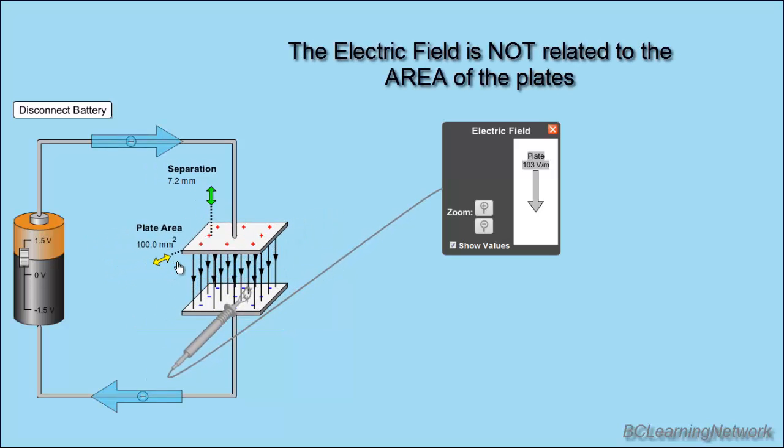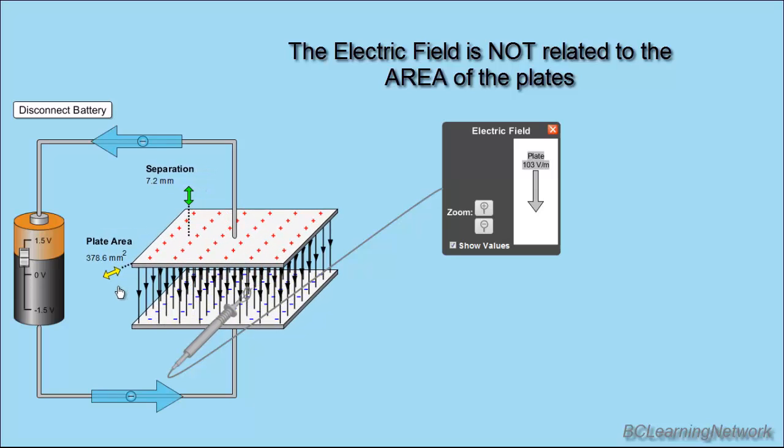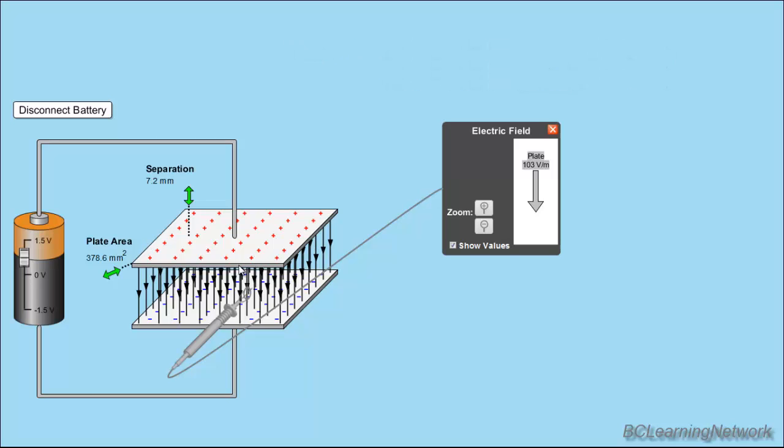So, plate area does not affect the value of our electric field. Now, obviously, it would matter in real life. If we have a bigger plate area, our electric field would hold more energy. So, this plate would last longer. So, if suddenly the battery was disconnected, there would be more charge on this plate to bleed off and service some other electric item. But, basically, it's only related to the energy. Bigger the plate, the more energy it stores. But the electric field is the same.